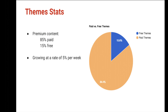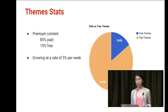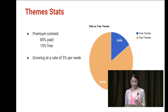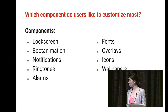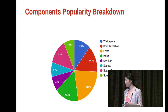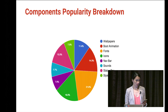The theme store launched about less than a year ago. About 85% of themes are paid and 15% are free. It's all community driven, and we have about a 5.5% weekly growth rate. Which components do users like to customize most? A lot of people think wallpapers, but surprisingly it's actually fonts — the most popular — followed by icons, and then boot animation.